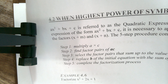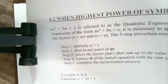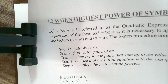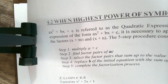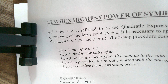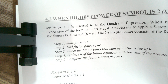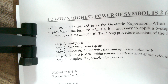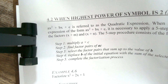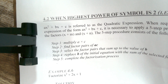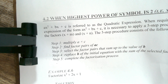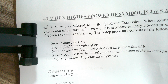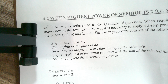Step one: multiply a by c. Step two: find factor pairs of a times c. Step three: find the appropriate factor pair that when summed gives the exact value of b. Step four: replace b in the expression with those factor pairs. Step five: complete the factorization process.